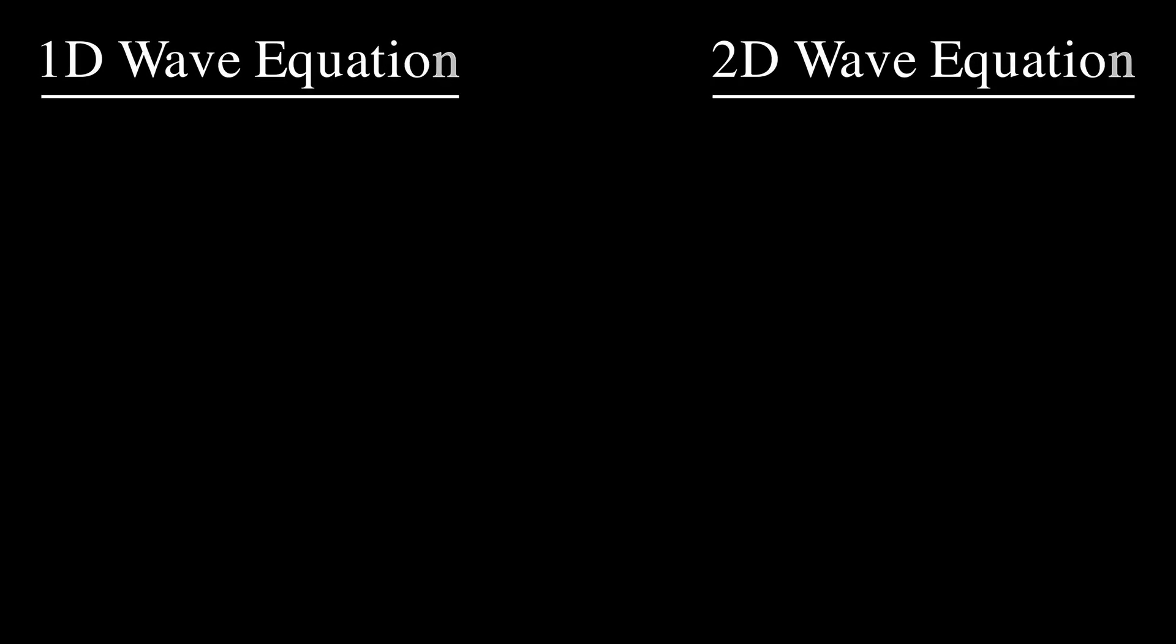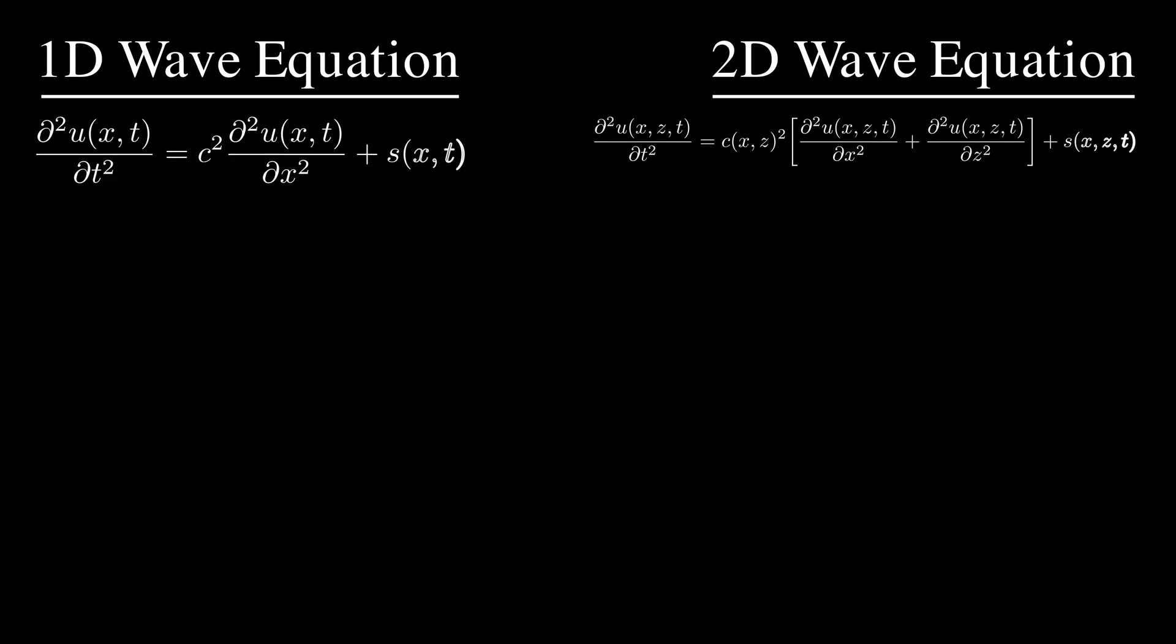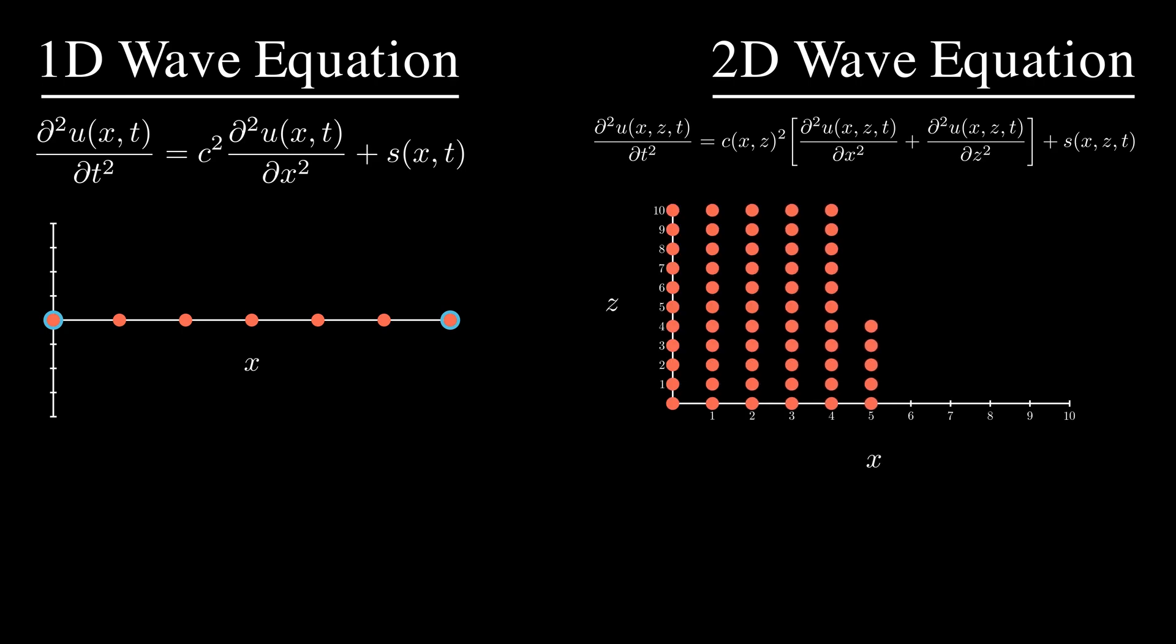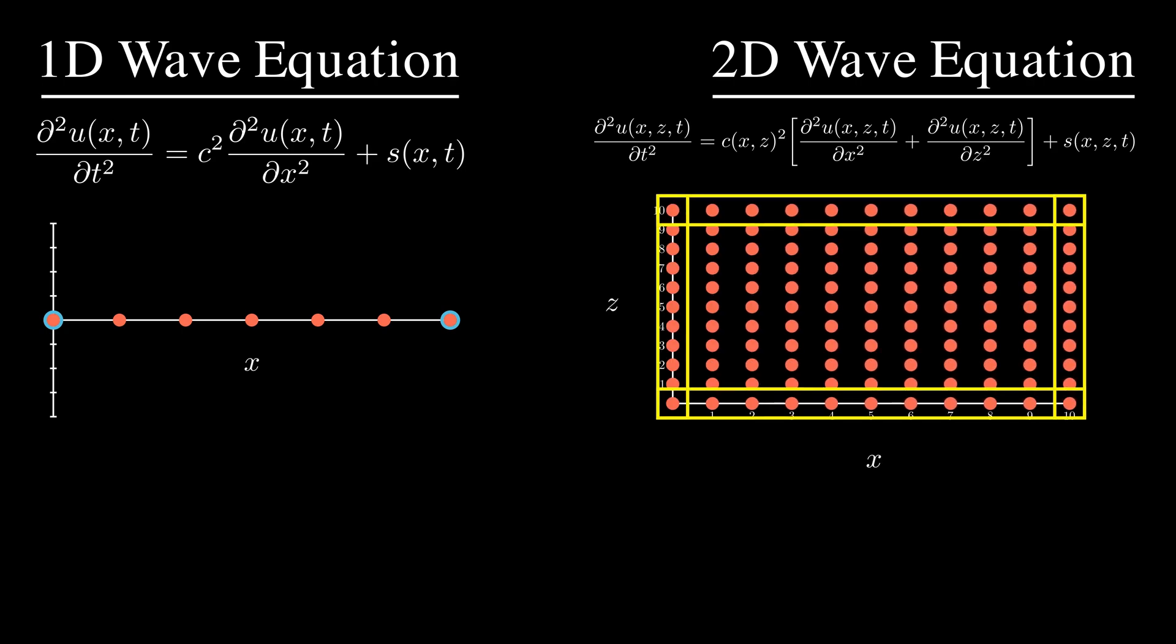As I started working on the 2D wave equation, I was pleasantly surprised to see that it is not that different from the 1D case. Looking at the differential equations, in the 2D version, we just have another spatial dimension. That's it. Everything else is exactly the same, well except in the 2D case, I am also considering a heterogeneous domain where the velocity can be uniform or not. As far as the boundaries are concerned, instead of a couple of points at the end of a string, we now have four different edges.